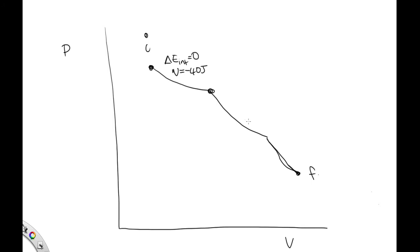Along the second part, we're told that this is adiabatic, which means Q is equal to 0. And we're told that the work done is negative, 20 joules, so minus 20 joules.